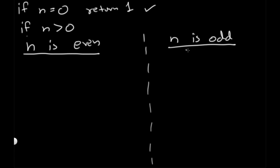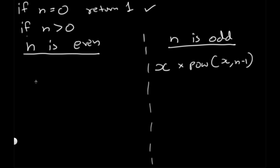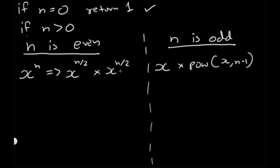When n is odd, we'll use the same approach: x multiplied by the power function on x, n minus 1. But when n is even, we can use a smarter method. x to the power of n equals x to the power of n/2 multiplied by x to the power of n/2. For example, 2 to the power of 4 is the same as 2 to the power of 2 multiplied by 2 to the power of 2 — you get the same answer.